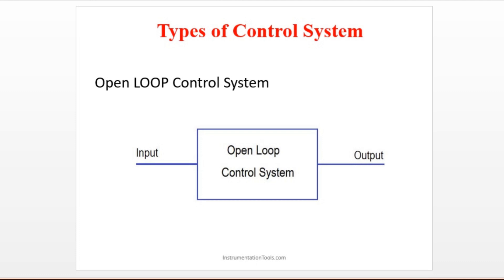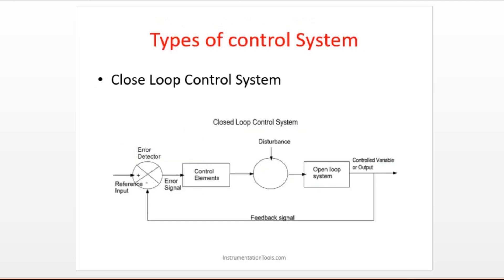For example, if there are more people inside, the temperature has to be a bit lower. But they don't have a way to inform the operator — they don't have access to tell the operator how many people are there and that they need less temperature. There is no feedback here — that is an open loop control system.